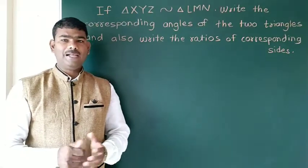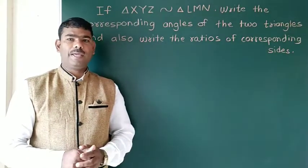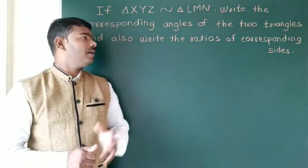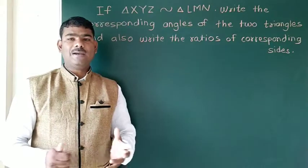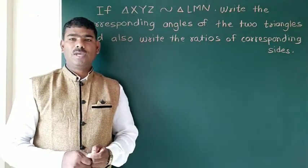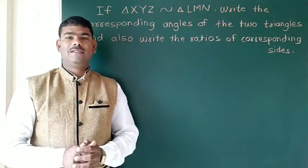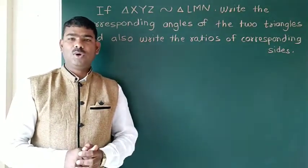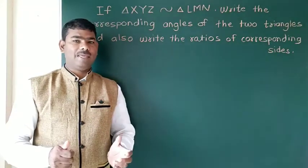When two triangles are similar, corresponding angles are congruent, and corresponding sides are in proportion. The ratio of corresponding sides are equal.